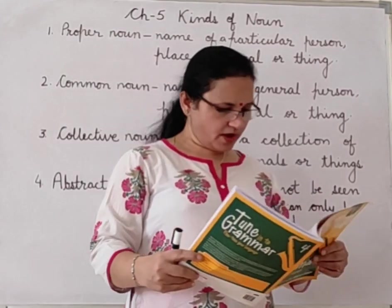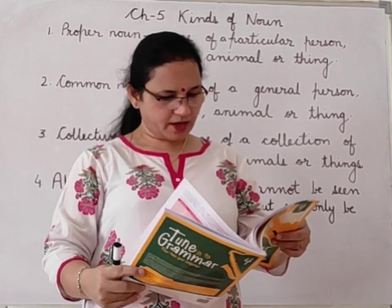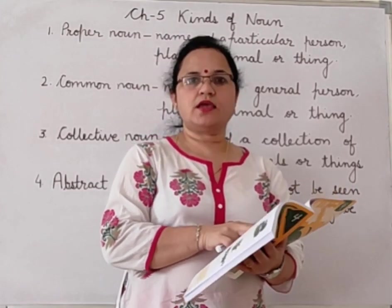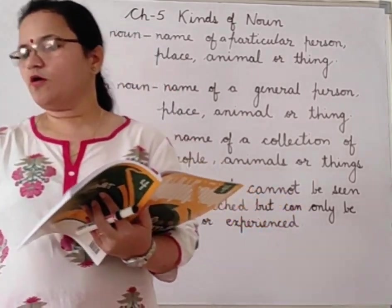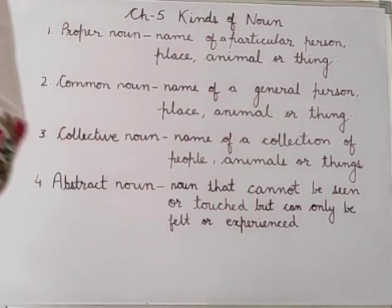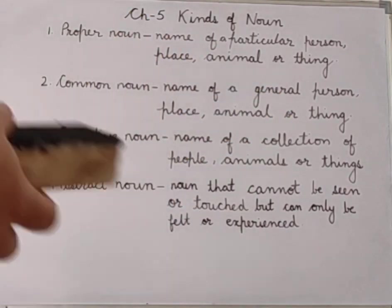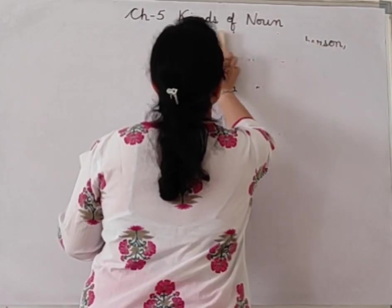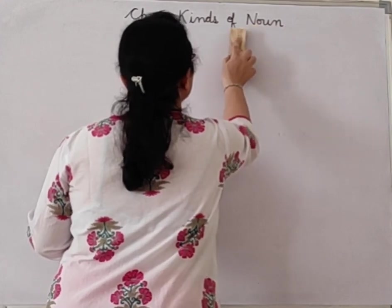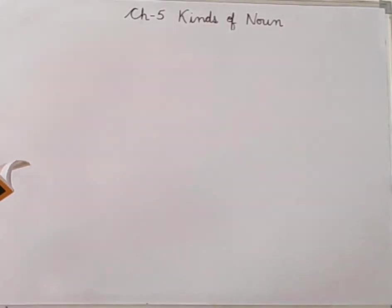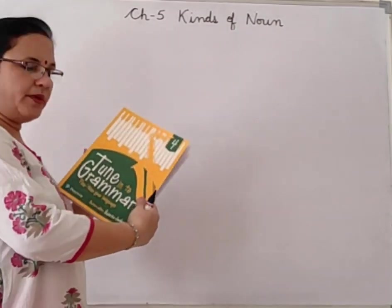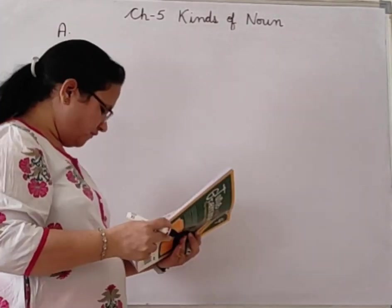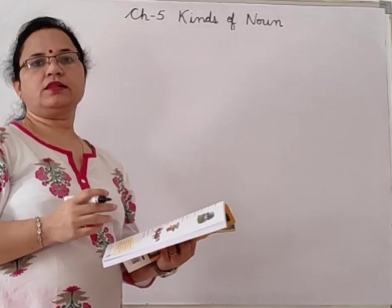Open children, page number 24. You have done one exercise. Now we are going to do Exercise A, which is given on page number 24. Open your book to page number 24. Exercise A: fill in the blanks with proper nouns.